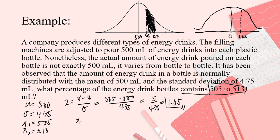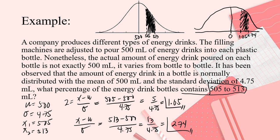And then, one more X because we have two. So, that is 513 minus 500 divide by 4.75. So, 13 divide by 4.75 and that is 2.74. Where is that? Let's say here.